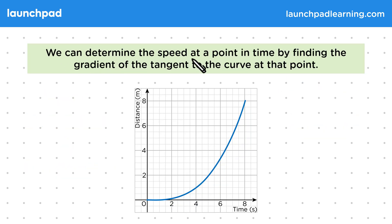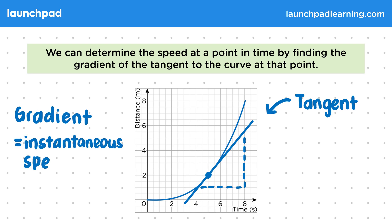We can determine the speed at a point in time by finding the gradient of the tangent to the curve at that point. So if we draw a line that just touches the curve at a point without crossing it, this is the tangent to the curve at that point. This is useful as the gradient of the tangent will be the same as the gradient of the curve at that point. So for a distance-time graph, this gradient will equal the instantaneous speed of the object.